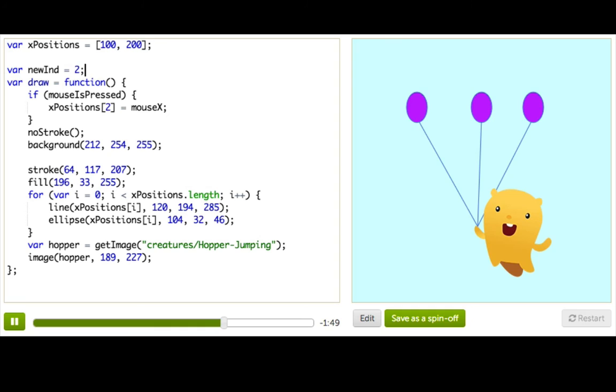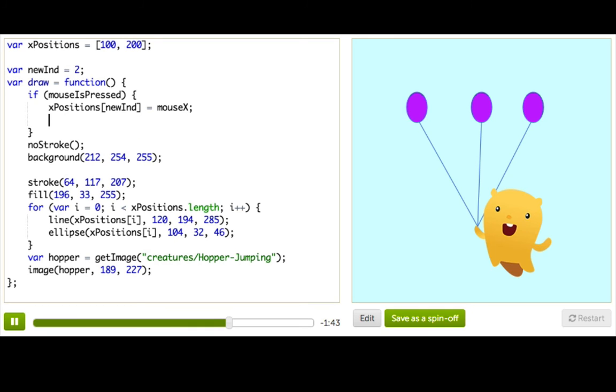So we could do this by having a little counter variable. So we say newind equals two. That's what it'll start off with. And then here we'll say newind instead of two. And then what we really want to do is say newind plus plus. So every time we add one to this. So it'll start off as two, then it'll become three, and then it'll become four. So every time they press, it'll become more. So let's try this.